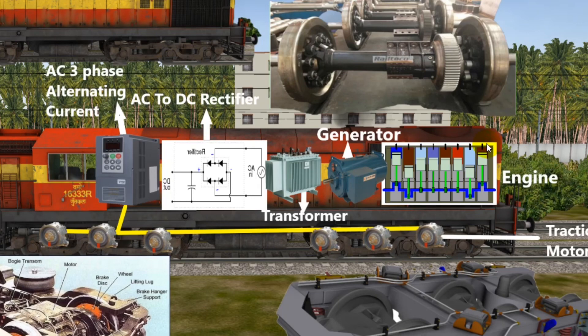In diesel locomotives, the B16 engine is used — a total of 16 cylinders. Diesel locomotives use this engine.